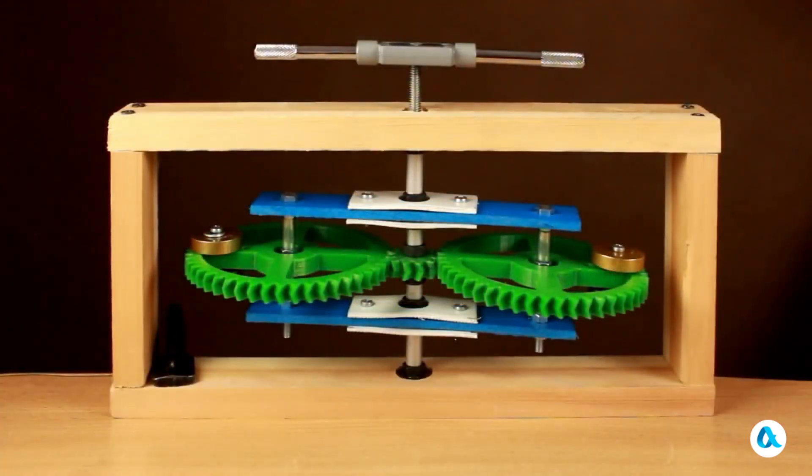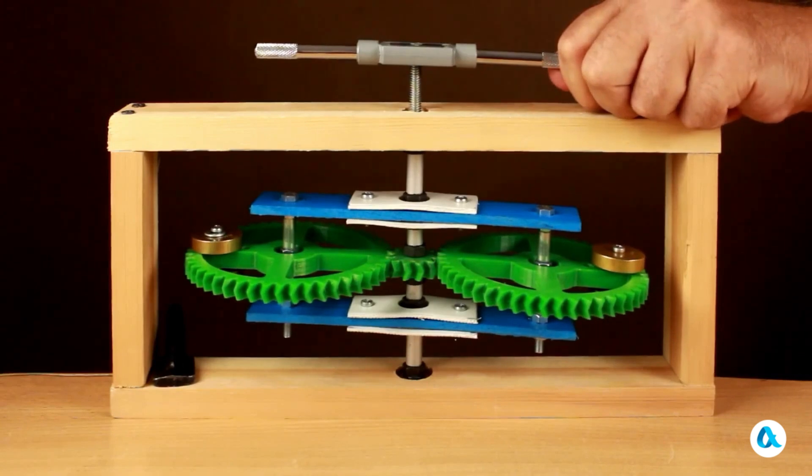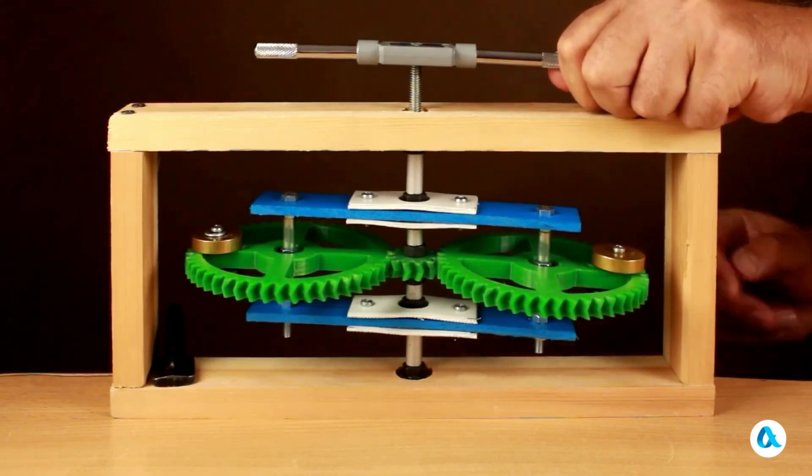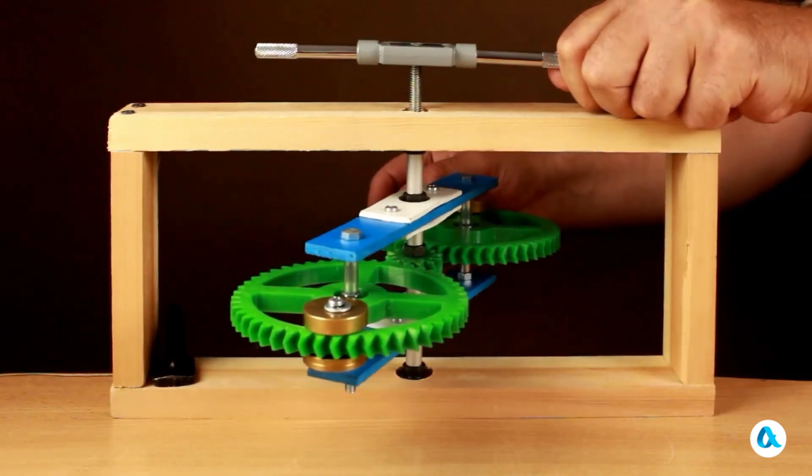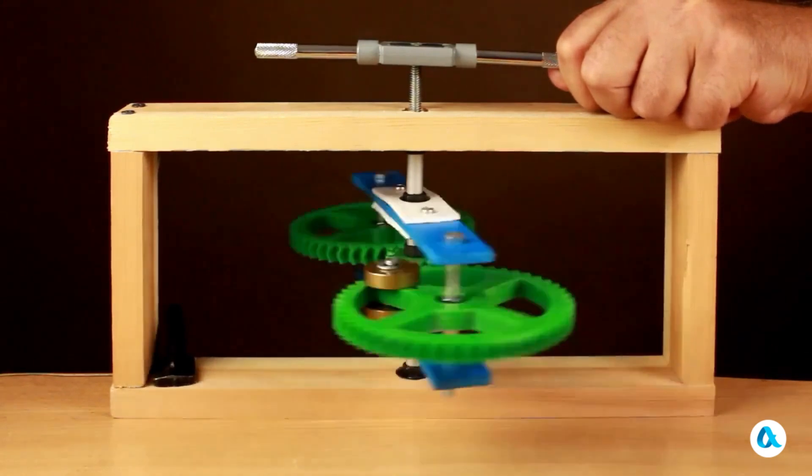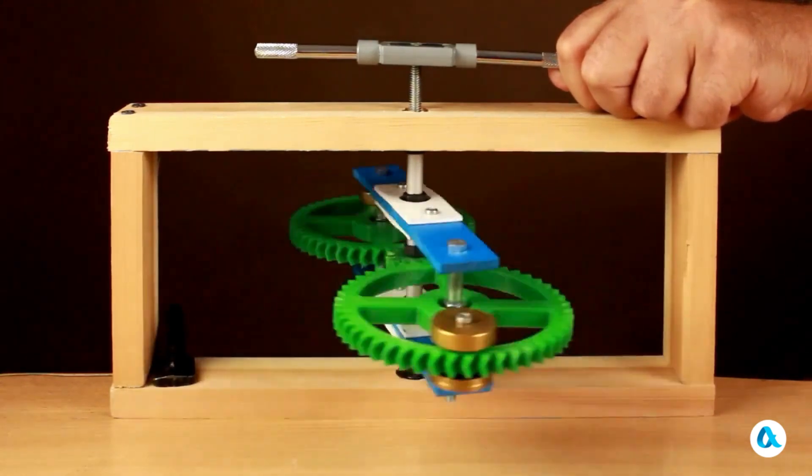This device is a planetary gear system with two degrees of freedom. I can easily fix the central gear using the handle, and then the two side gears, which are securely mounted on the carrier, will roll around it precisely like this.